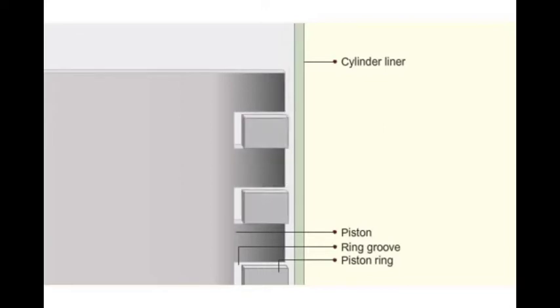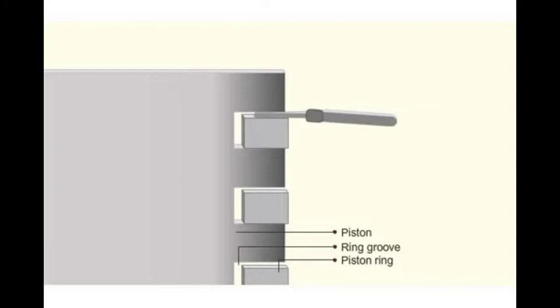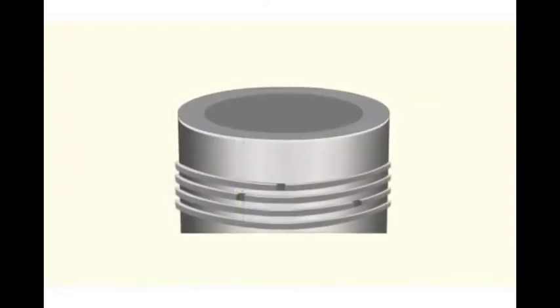To measure axial clearance, fit the ring in the respective groove such that it rests on lower surface of the groove. Measure the clearance between piston ring and upper surface of the groove using a filler gauge. Record two sets of reading: forward, aft and port starboard.